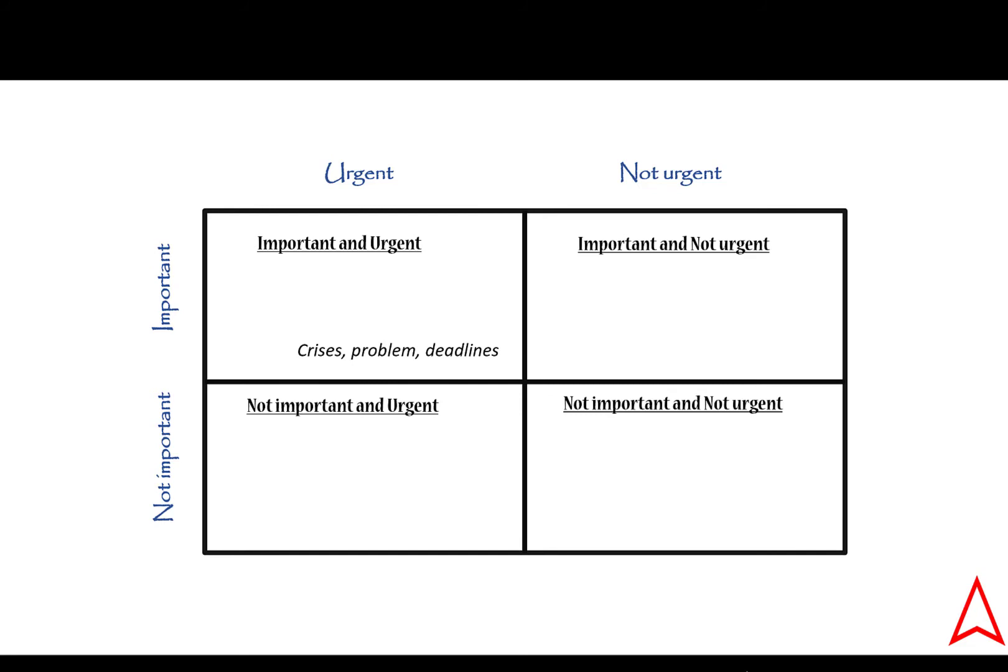Quadrant two: not urgent but important tasks. This quadrant usually has relationships, planning, and health. For example, weekly planning, long-term planning, exercising, family time, taking a class to improve a skill, studying, meditating, car and home maintenance, creating a budget and savings plan, monitoring sales strategy, reading.